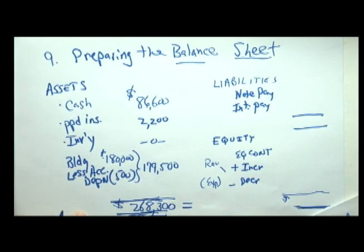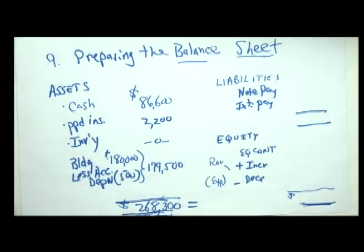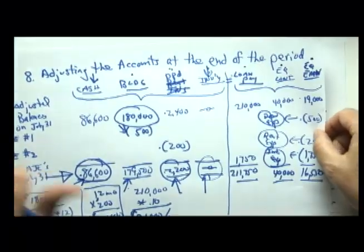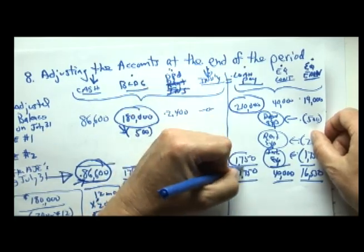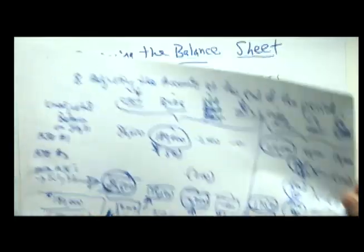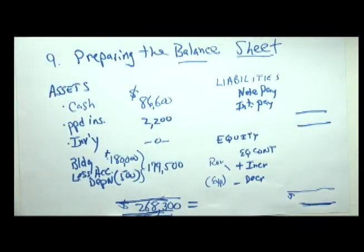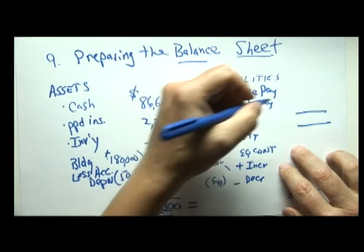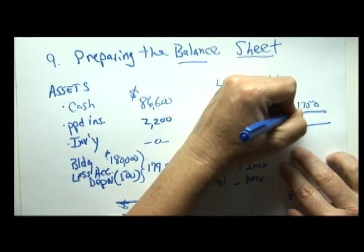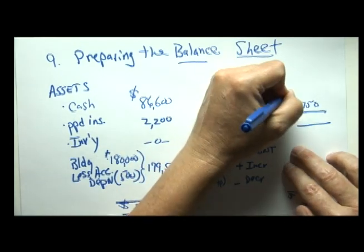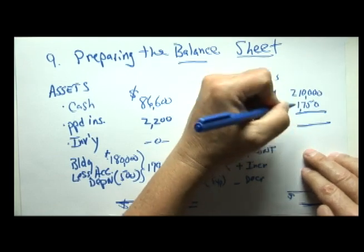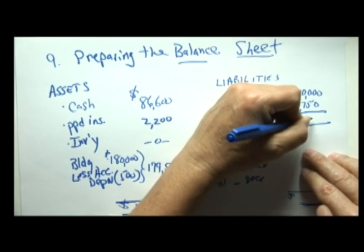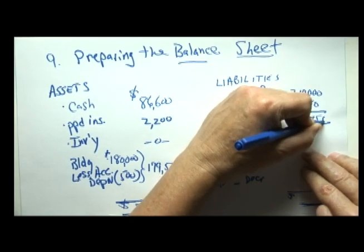Our notes payable to the bank were two hundred and ten thousand, and interest payable is seventeen fifty. So the note itself is two hundred and ten thousand, and the interest payable is seventeen fifty, making our total liabilities two hundred eleven thousand seven hundred fifty.